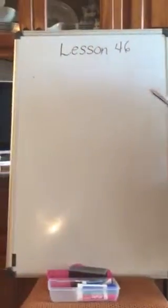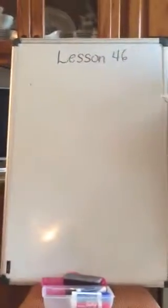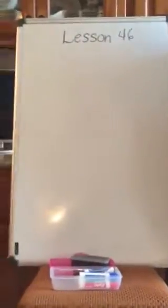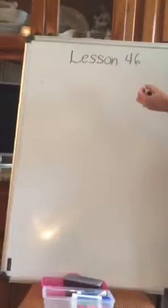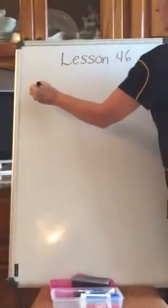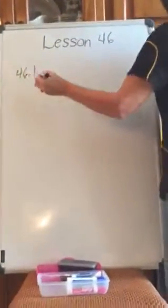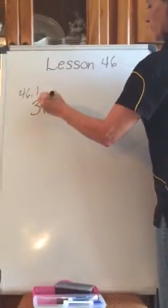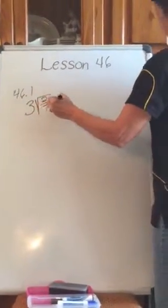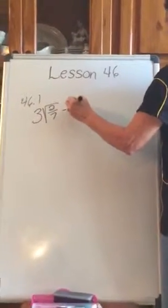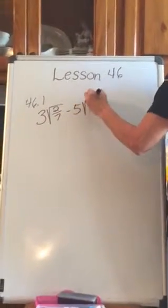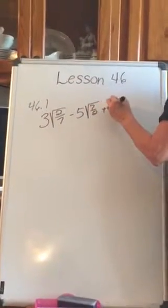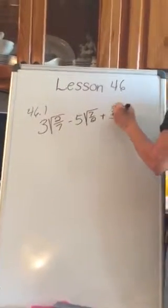This is lesson 46 on handling radical expressions. Let's work 46.1, found on page 203. The expression is 3 times the square root of 2 over 7, minus 5 times the square root of 7 over 2, plus 3 times the square root of 56.